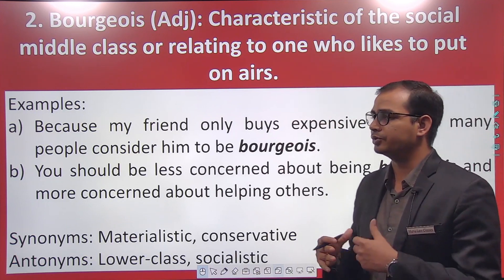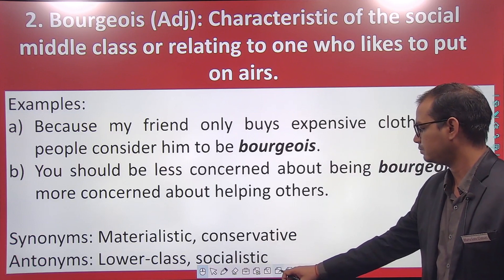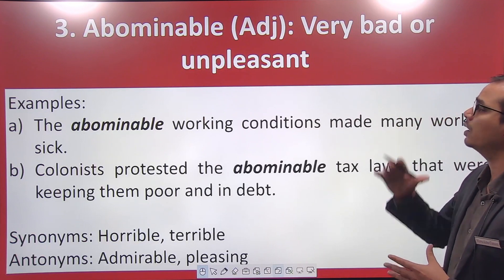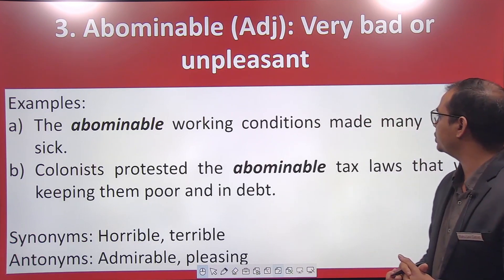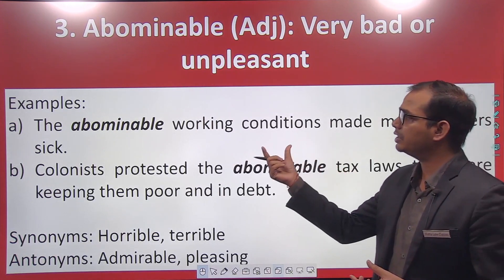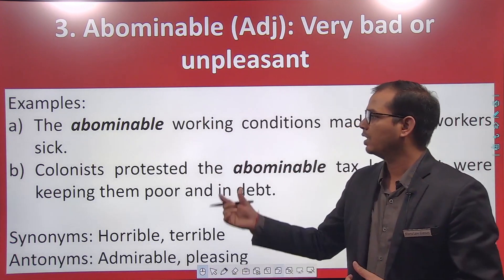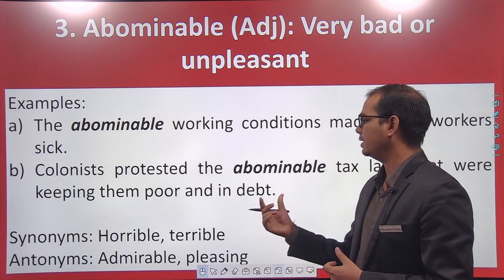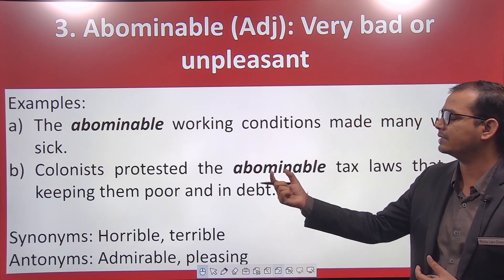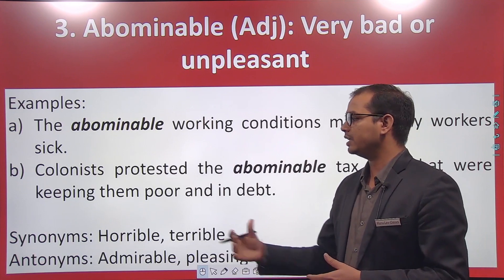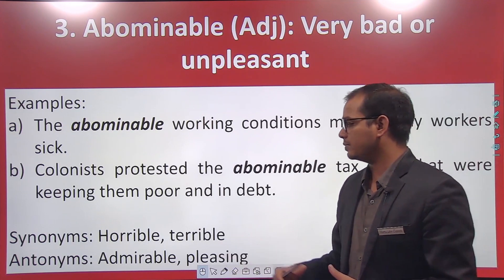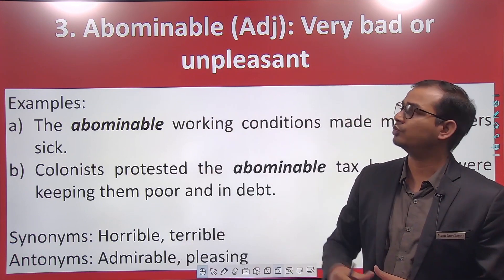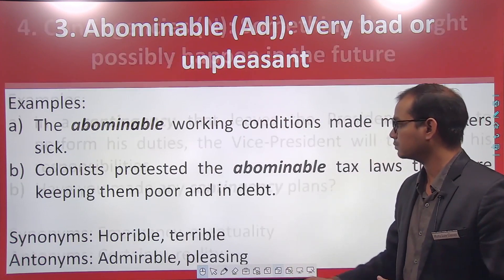The next word is 'abominable.' Abominable means very bad or unpleasant. For example, the abominable working conditions made many workers sick. Another example: colonists protested the abominable tax laws that were keeping them poor and in debt — so bad laws are being protested against. Synonyms are 'horrible' and 'terrible'; antonyms are 'admirable' and 'pleasing.' Something that is praiseworthy and good is its opposite.